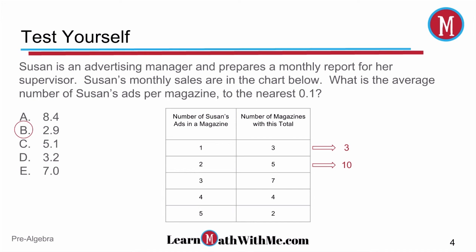Seven magazines with three ads, so that's 21 ads. Four magazines that have four ads, that's 16. And two magazines with five ads in them, that's ten. So our total number of ads across all of the magazines is 60.